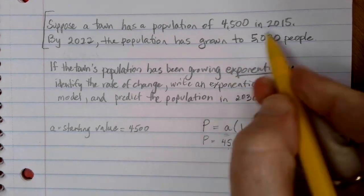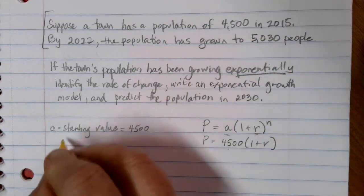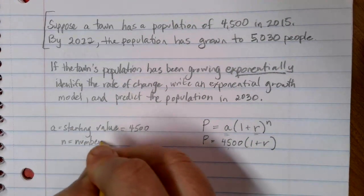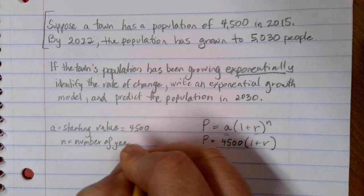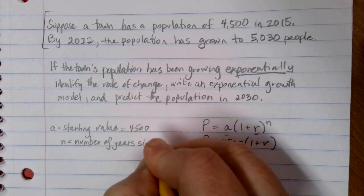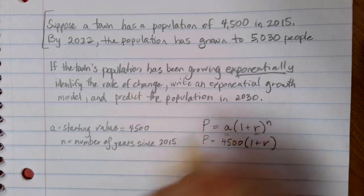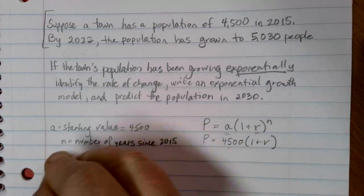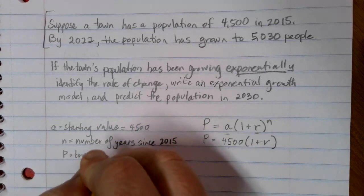Because this is my starting value and this is 2015, my N is going to be measuring the number of years since 2015, because that's my starting year. And P, of course, is measuring the town's population, which is what I'm trying to find out about.